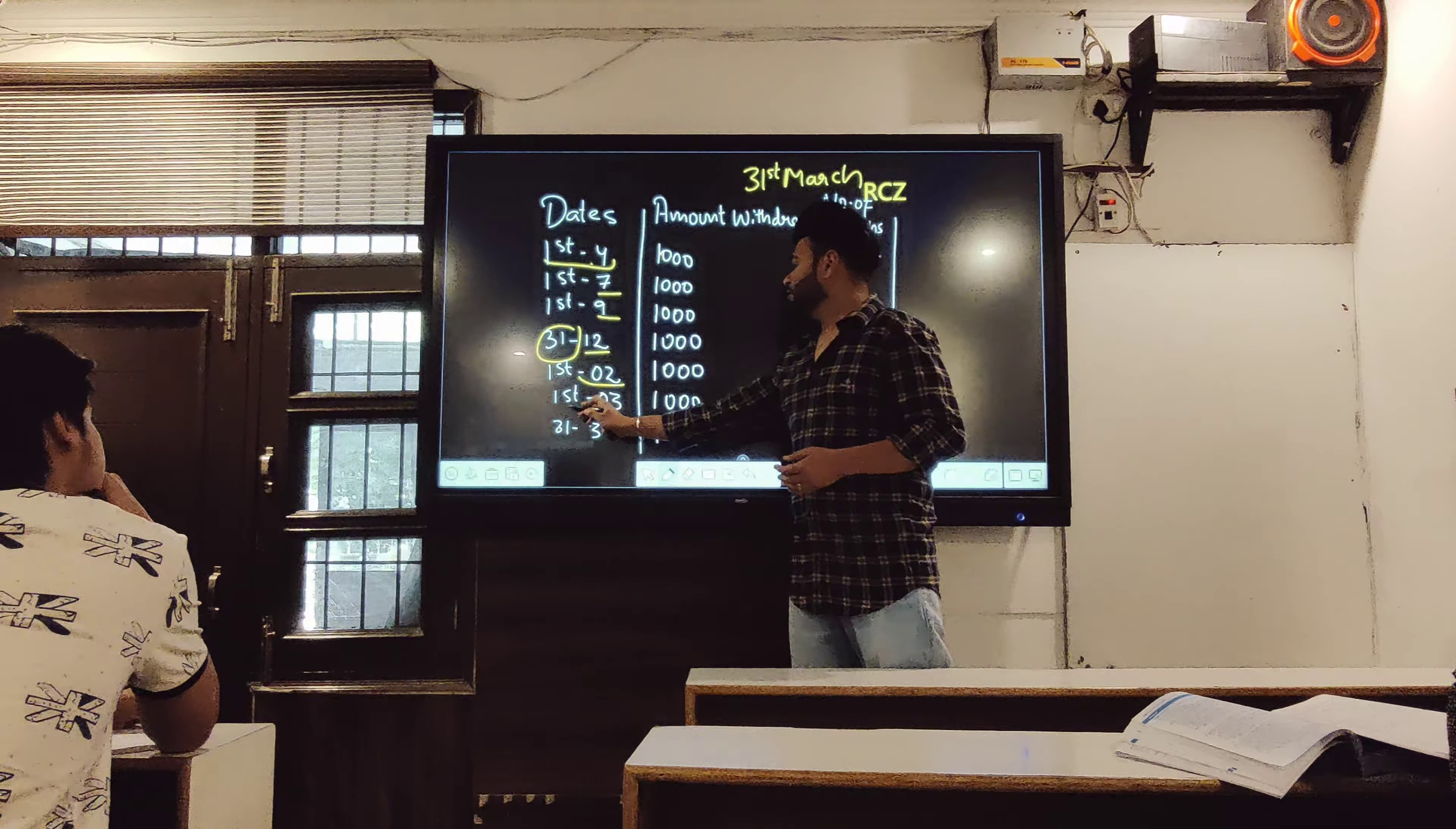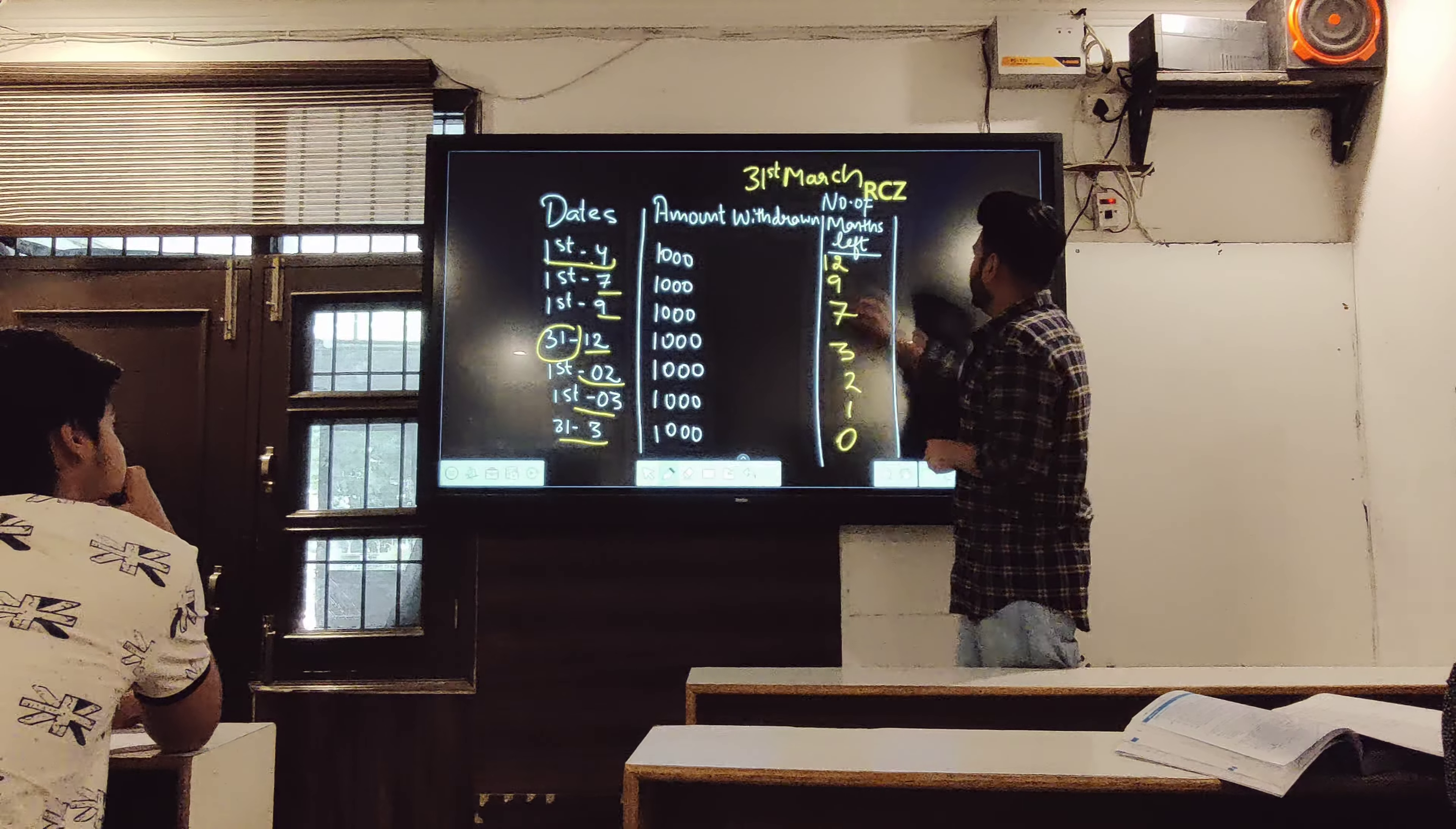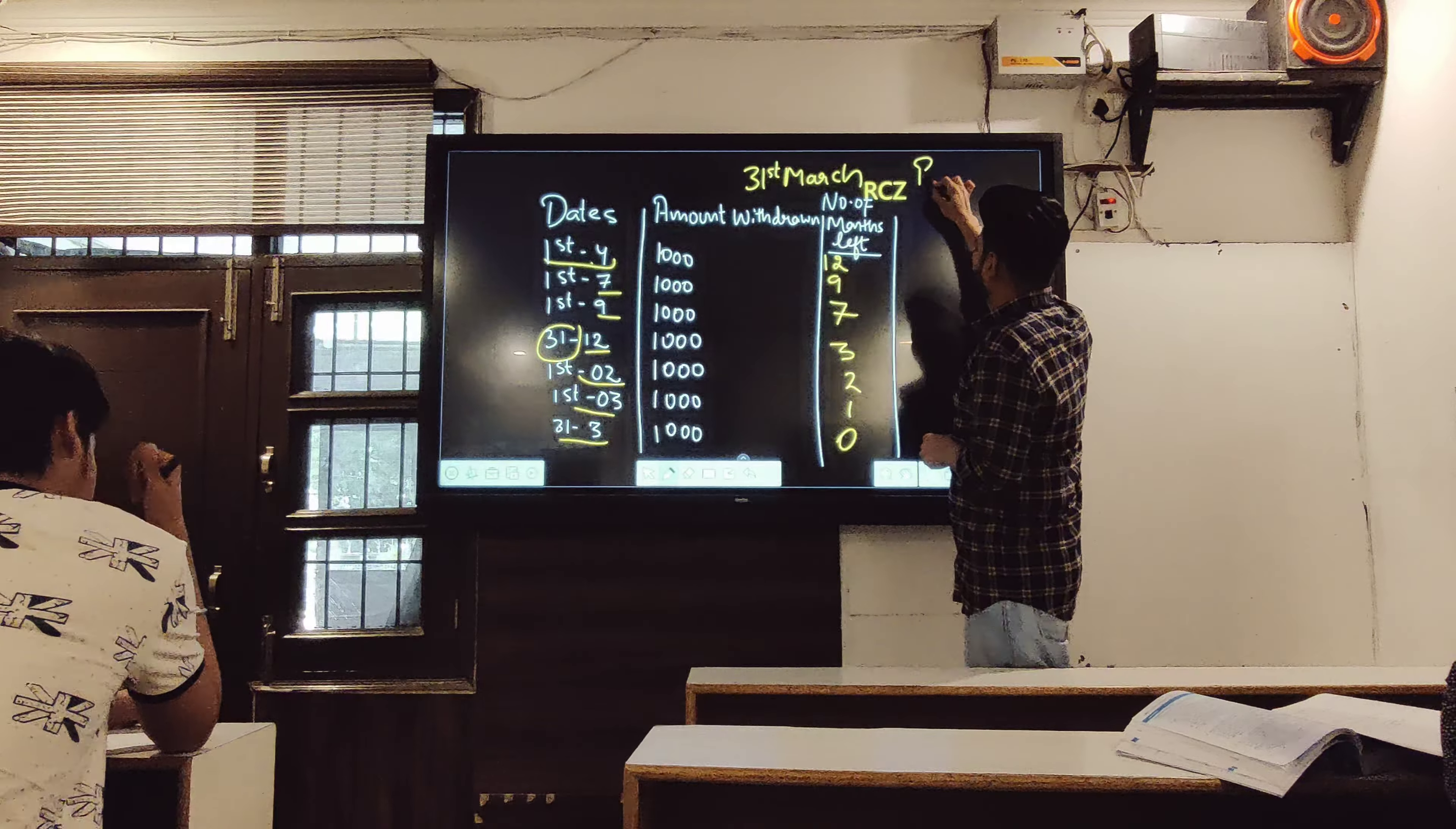July to March, how many months? Nine months. Count karo. July, August, September, October, November, December, Jan, Feb, March. Next is 1st September. September, October, November, December, January, February, March. How many? Seven months. Next, Feb and March. How much? Two. Next, 1st March to 31st March. One. Last 31st March to 31st March - last one is not considered.